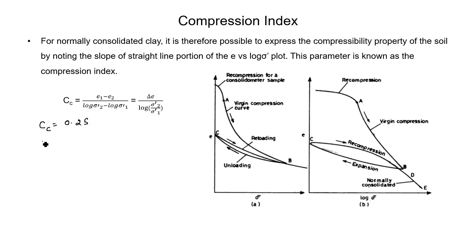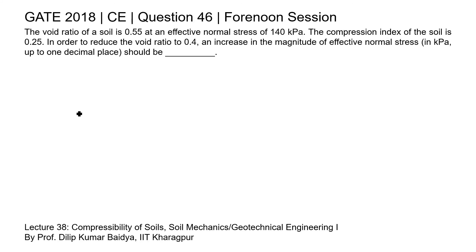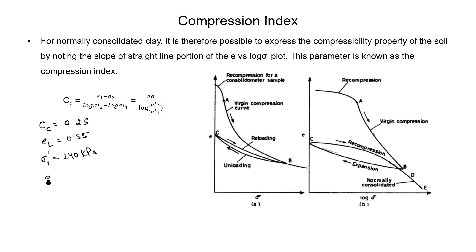We write e1 = 0.55 and σ1' = 140 kilopascal. The reduced void ratio e2 is 0.4. We need to find the corresponding effective stress σ2'. First we will solve for σ2', and then we can find the increase in the value of effective normal stress.